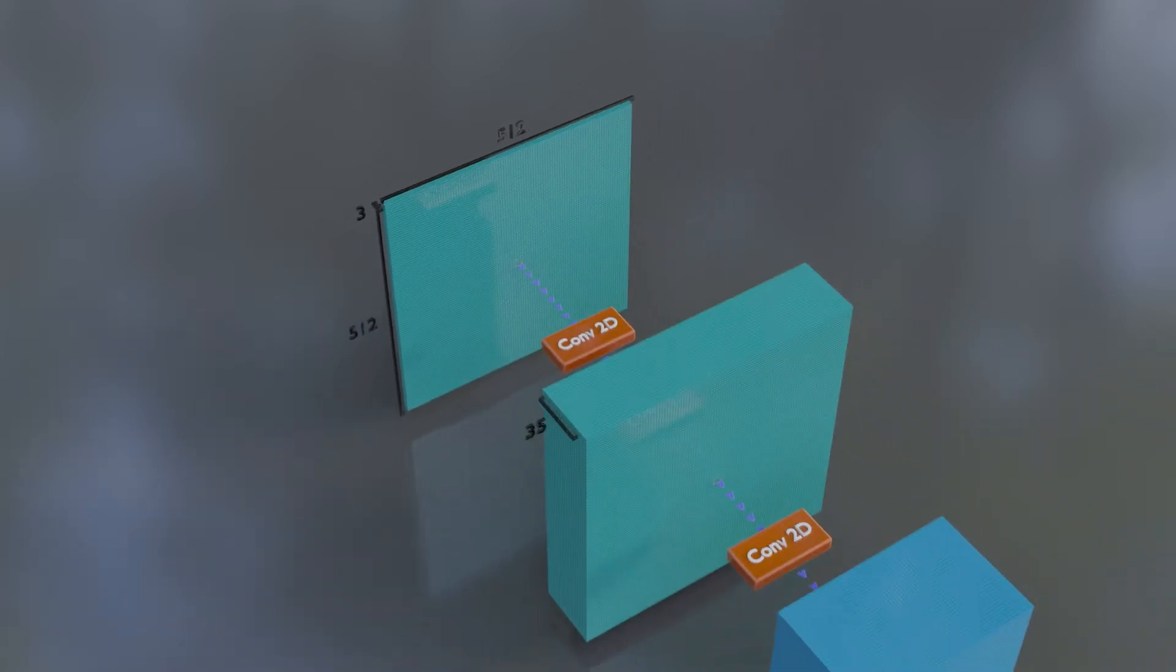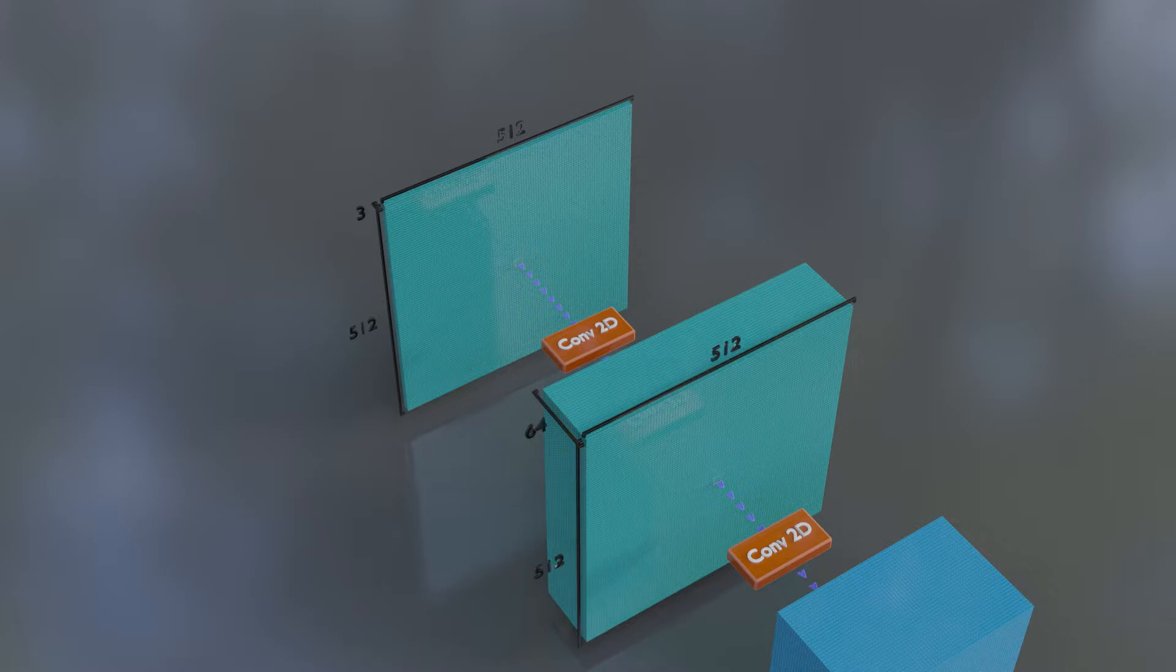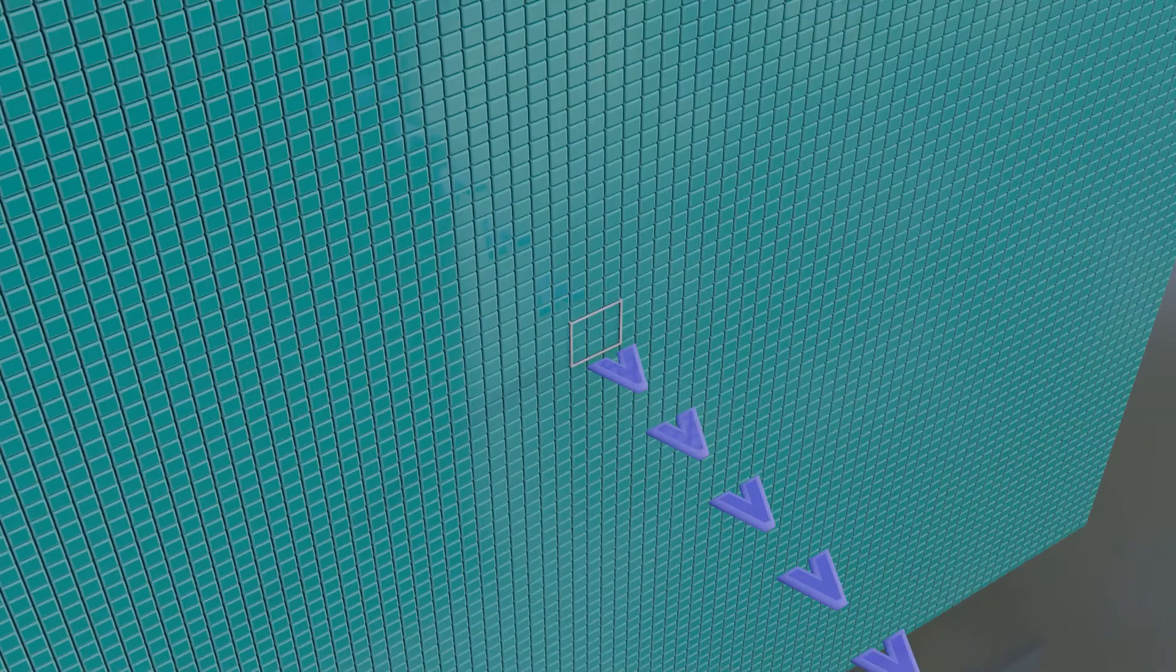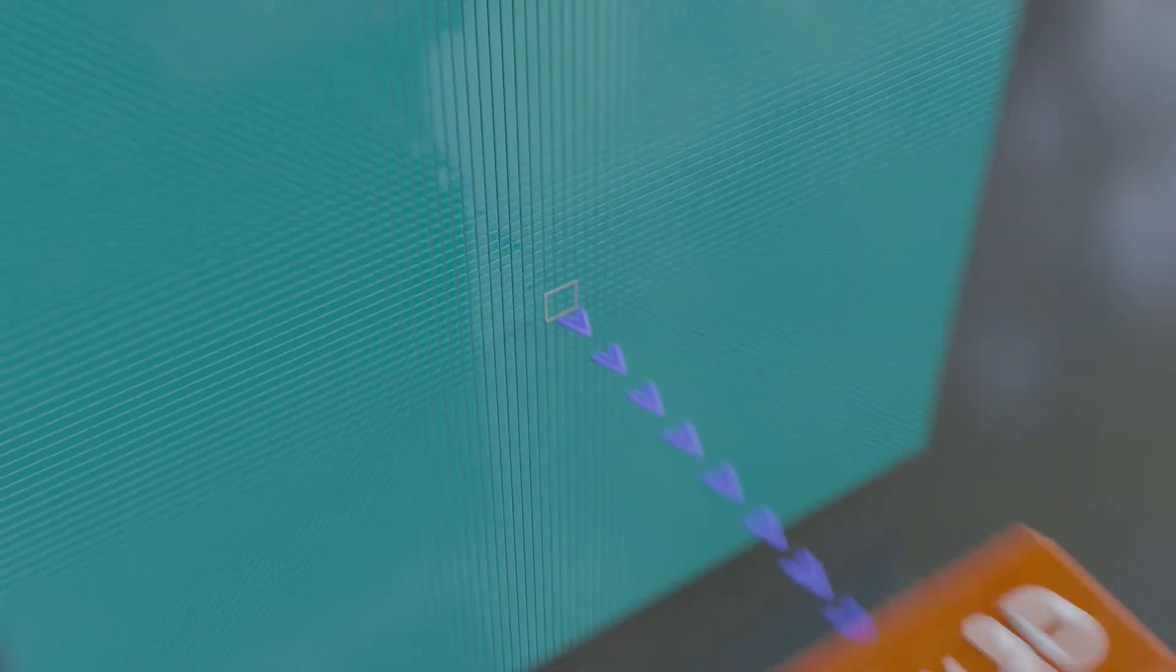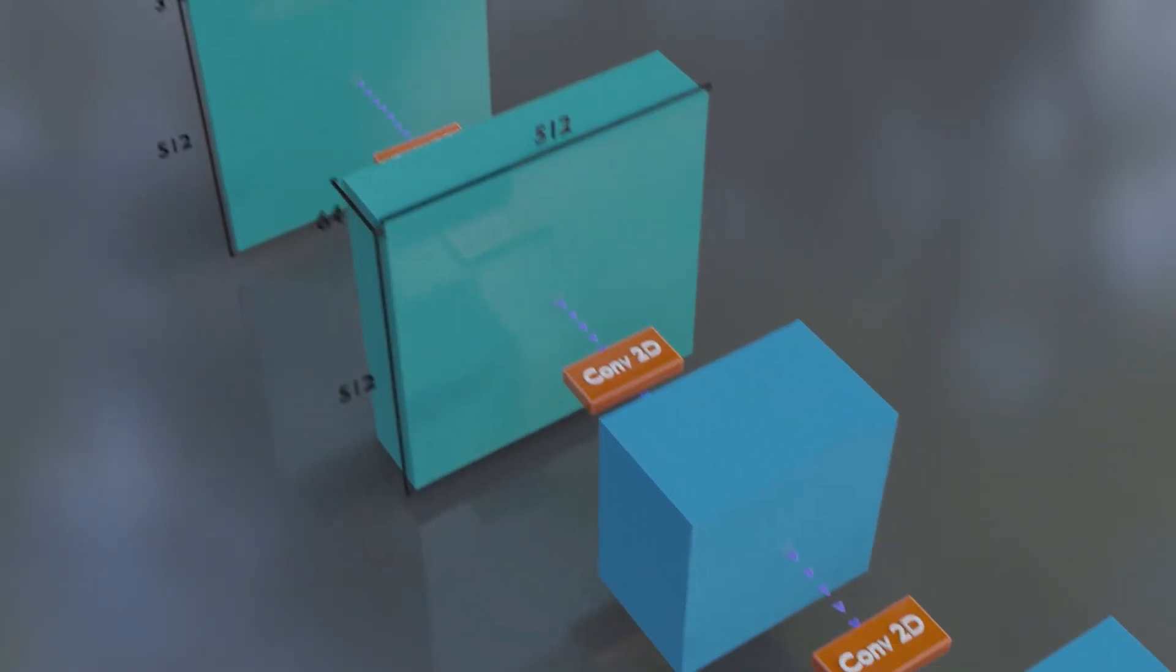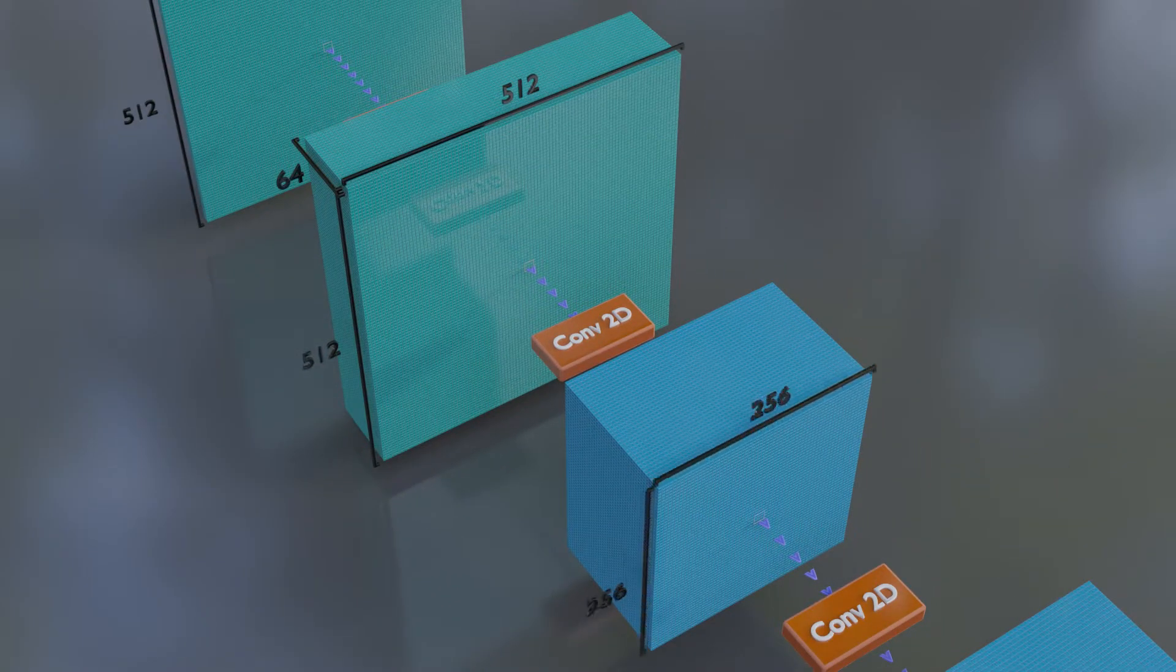Our first layer outputs 64 features and stays at our current resolution. Note that we're using a kernel size of 3x3 for all layers here unless I mention otherwise. The next layer does two things. It cuts the resolution in half and doubles the number of features. This is fairly typical. Increases in the number of features usually happen at the same time that we reduce resolution.